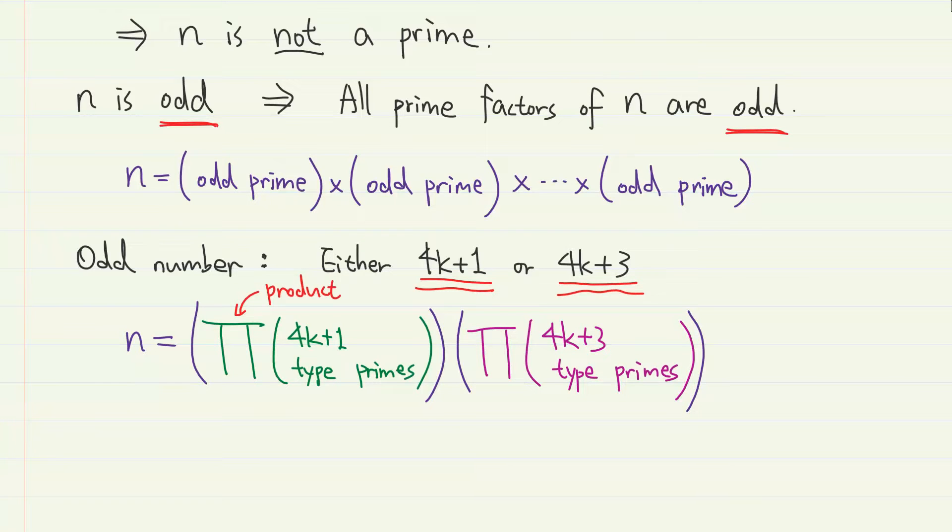n can be expressed as the product of positive integers in these two forms. You know, something like this. A product of a bunch of 4k plus 1 type primes and a product of a bunch of 4k plus 3 type primes.